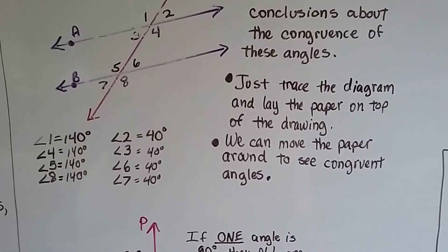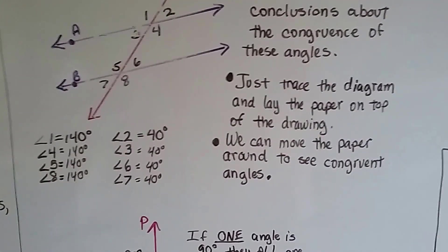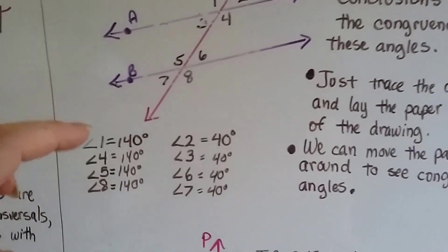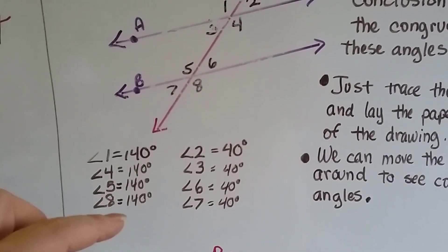Just so you can get a visual. You just trace the diagram and lay the paper on top of the drawing and move it around to see which angles are congruent. So when I measured it, angles 1, 4, 5, and 8 were all 140 degrees.